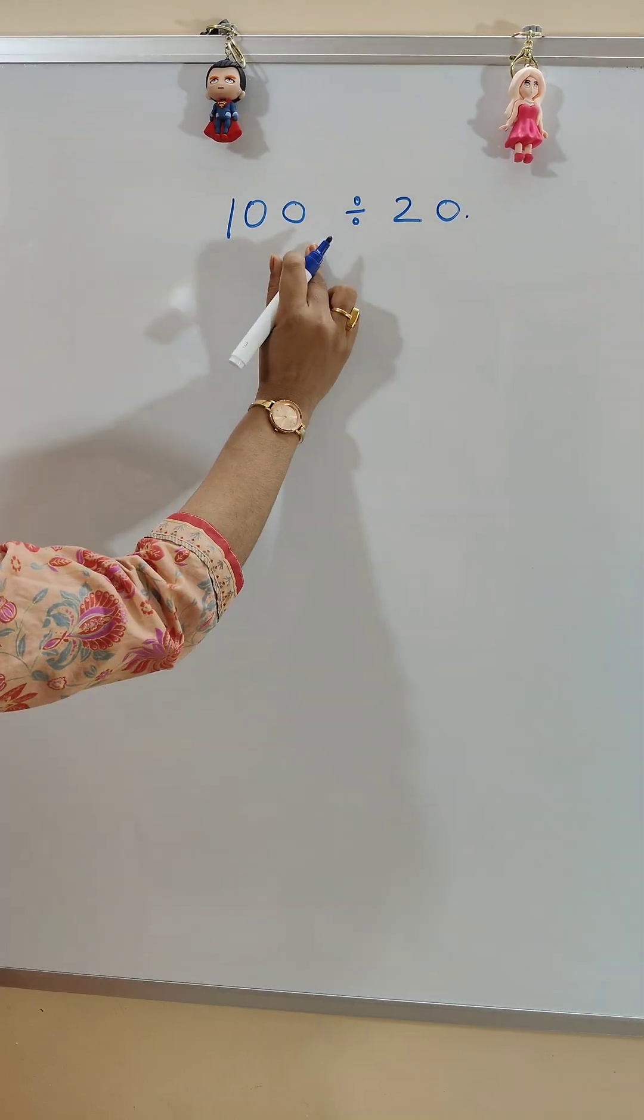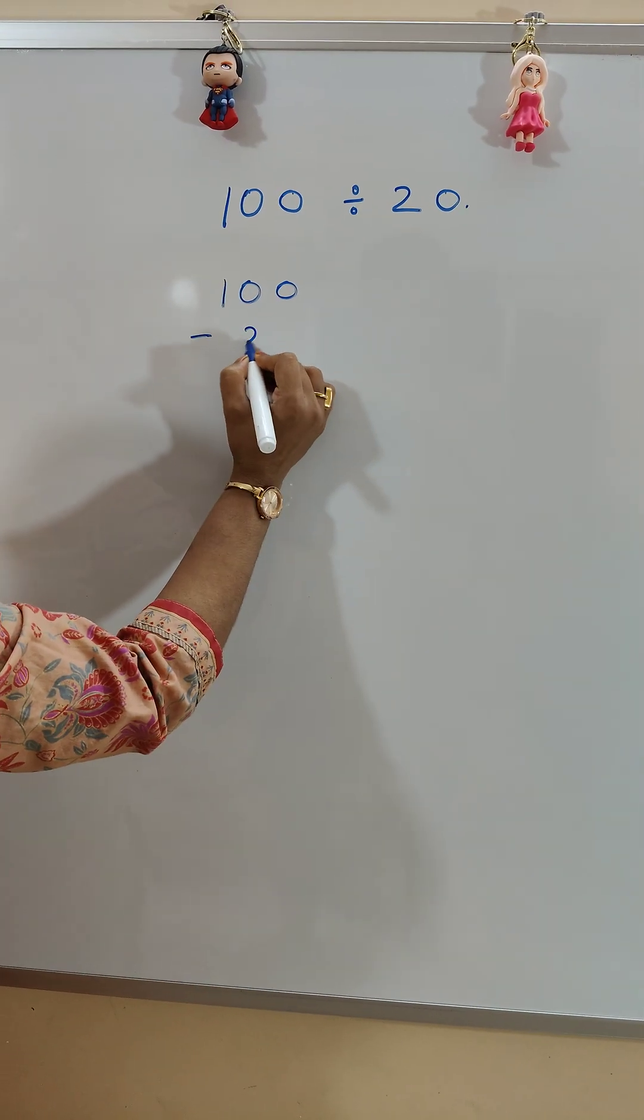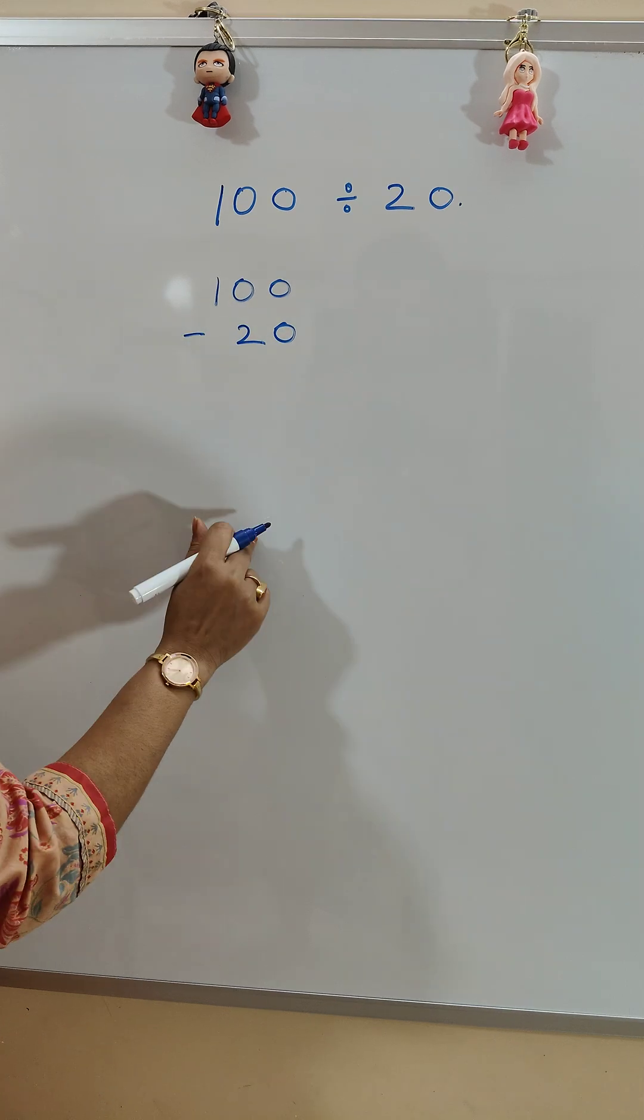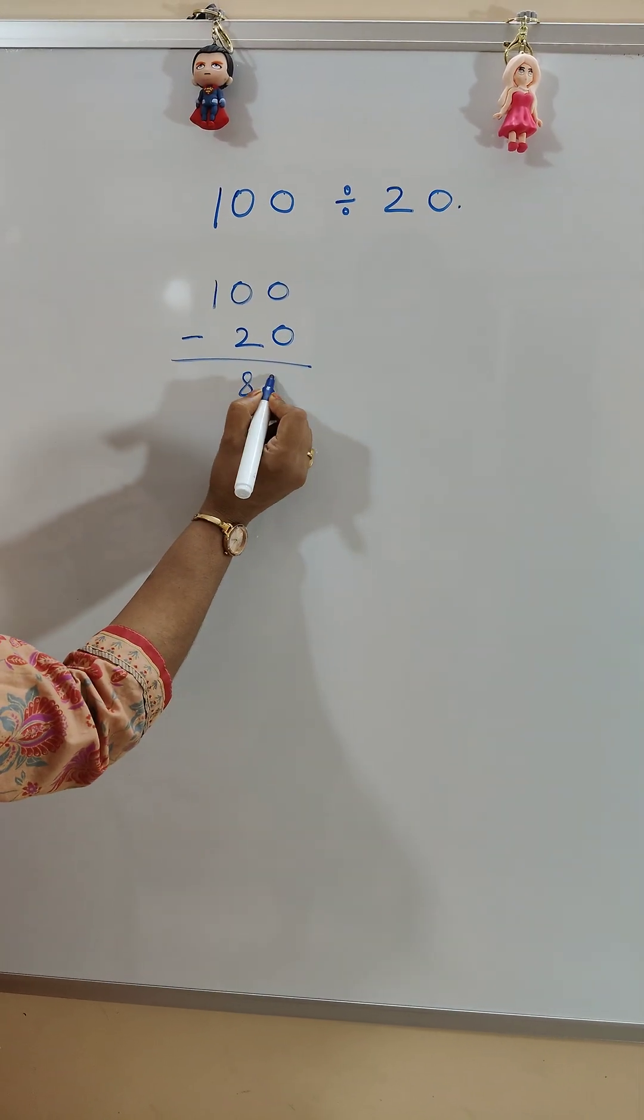So the total is 100. We will repeatedly subtract by 20 until we get down to 0. So 100 minus 20 is 80.